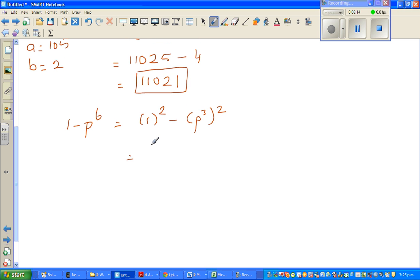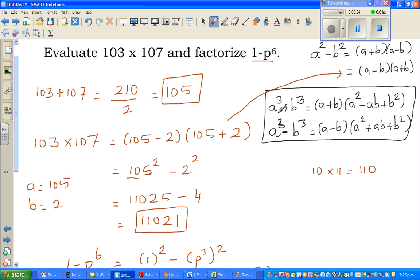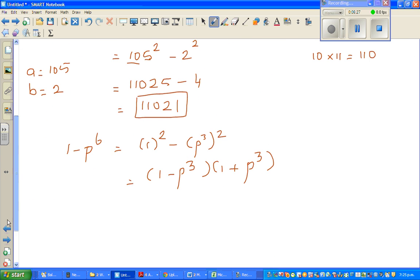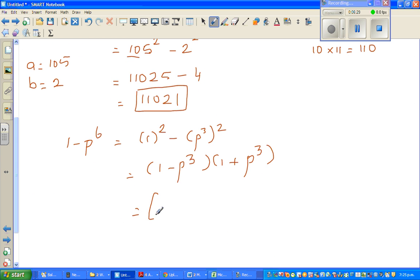So this is nothing but using difference of 2 squared, it is 1 minus p cubed times 1 plus p cubed. Now we're going to use this formula, a cubed plus p cubed and a cubed minus p cubed. So this is in a big bracket I can write, this is 1 cubed minus p cubed.